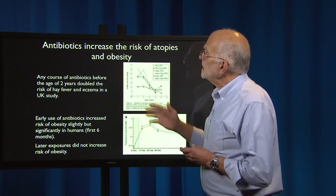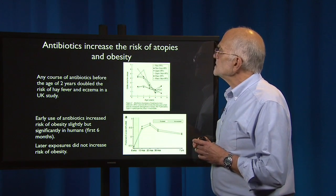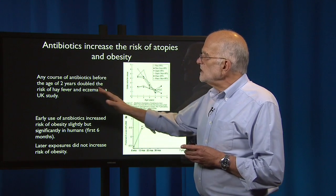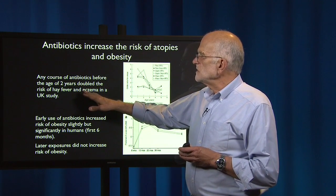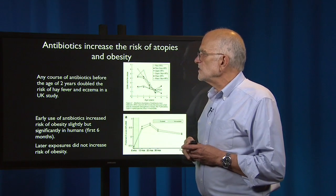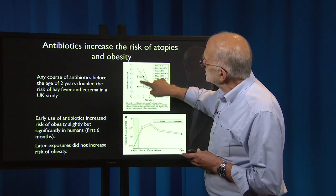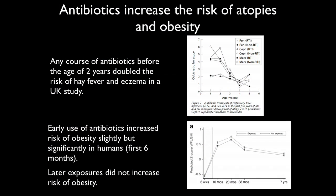Antibiotic therapy also increases the risk of atopies and obesity. Any course of antibiotics before the age of two years doubled the risk of hay fever and eczema in a UK study. Early use of antibiotics also increased the risk of obesity slightly but significantly in humans. Later exposures did not increase the risk of obesity. So atopies and obesity both appear to be conditions mediated by the microbiota.